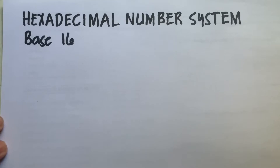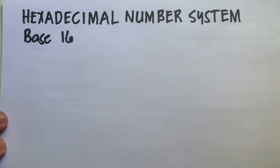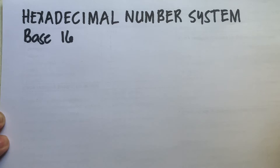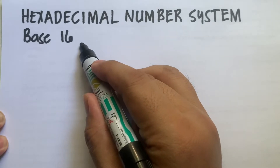Hello guys, in this video I'm going to teach you the basic operations of the hexadecimal number system. Before we proceed, let us discuss first what is the hexadecimal number system. Hexadecimal, sometimes called hex, is actually a number system made of 16 symbols — it is in base 16.